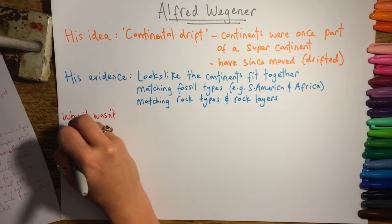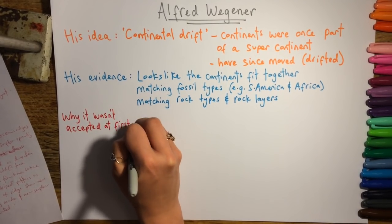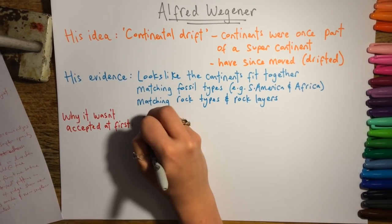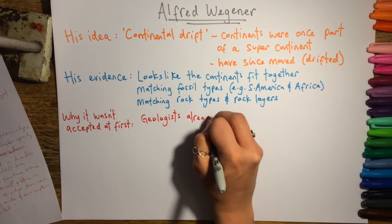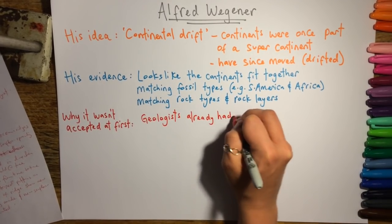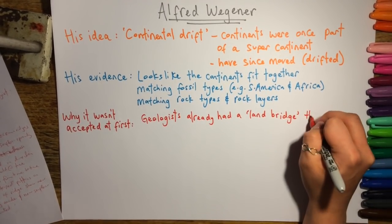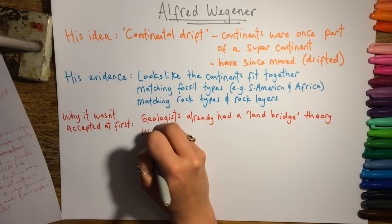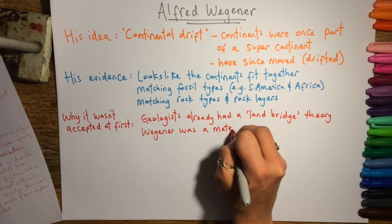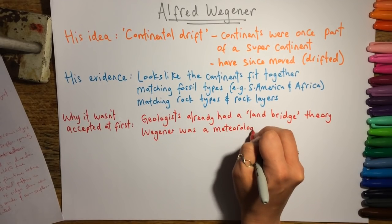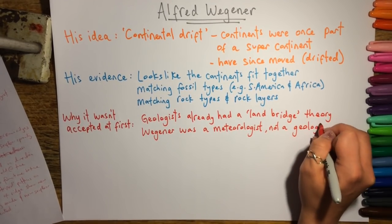However, geologists didn't accept his theory to start off with. One reason was that they already had a theory that was working for them — that there was a land bridge that used to connect South America and Africa. Another reason was the fact that he was a meteorologist, who studied weather patterns, rather than a geologist who studies the earth and the earth's history.